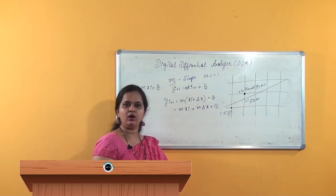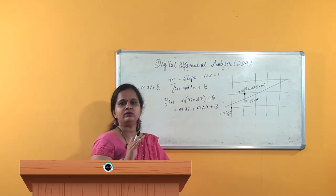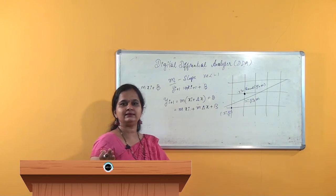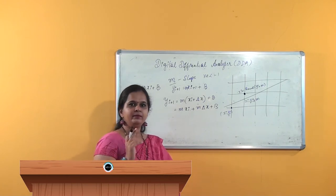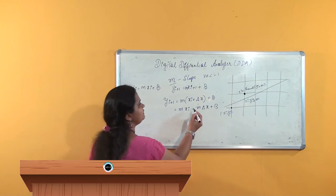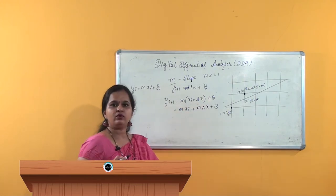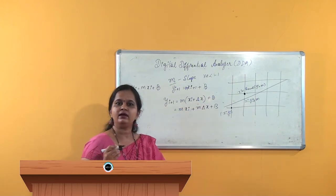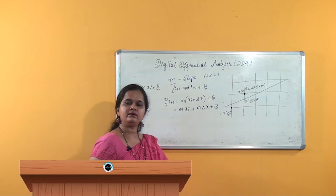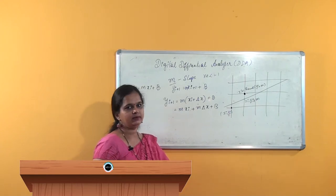If my x is 1 now, the next point my x is going to be 2. Therefore, the change in x is 2 minus 1, which is 1. The change in x is always represented as delta x, and if you want to represent the change in y, it is represented as delta y.